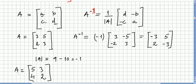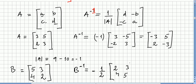Let us do another example. I am going to call it matrix B. The inverse of B — using the same algorithm — the determinant is 2 times 5 = 10 minus 12 = minus 2. So we have 1 over minus 2, which I am writing as minus one half. Now 5 and 2 exchange, and 3 and 4 stay the same but we change the sign.